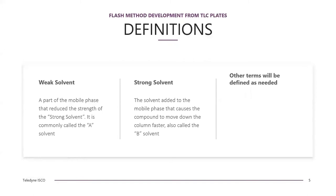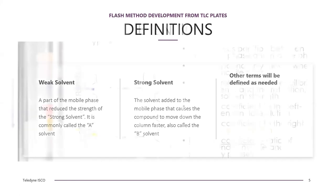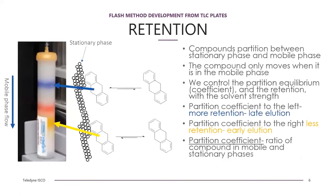The weak solvent is a part of the mobile phase that reduces the strength of the strong solvent; it is commonly called the A solvent. The strong solvent causes the compound to move down the column faster and is generically called the B solvent. The weak solvent modulates the strength of the strong solvent so compounds don't elute too quickly. The solvent strength modulates something called a partition coefficient — the compounds partition between the mobile phase and the stationary phase, and we control the partition equilibrium by changing the solvent strength.